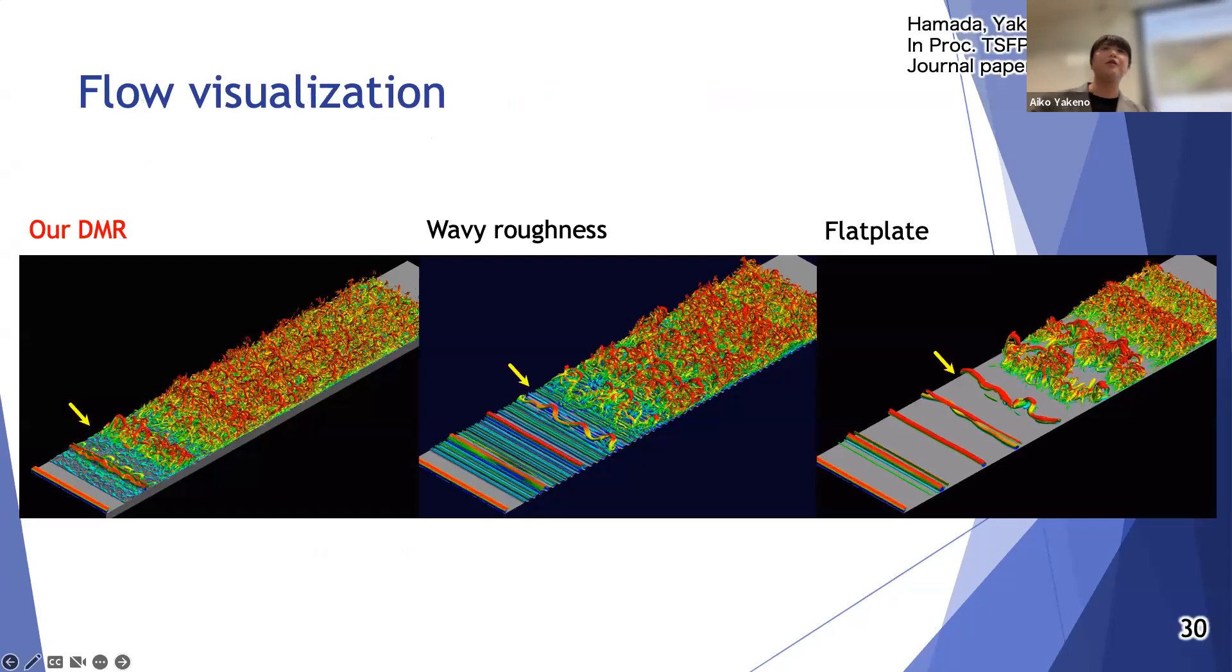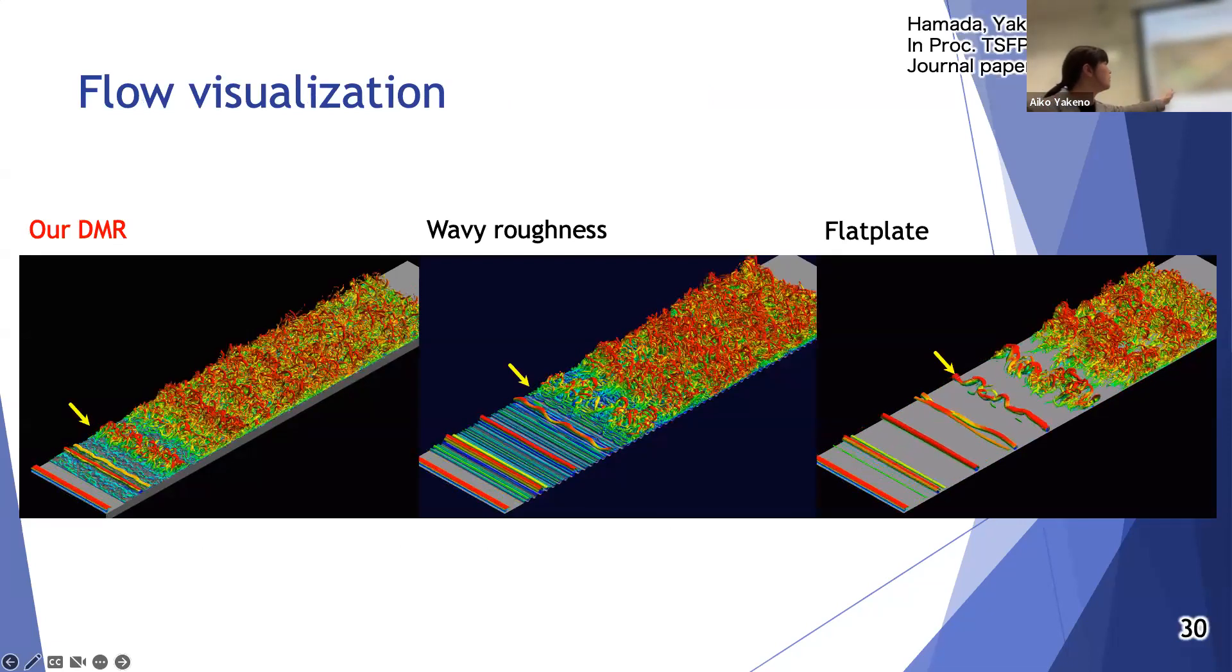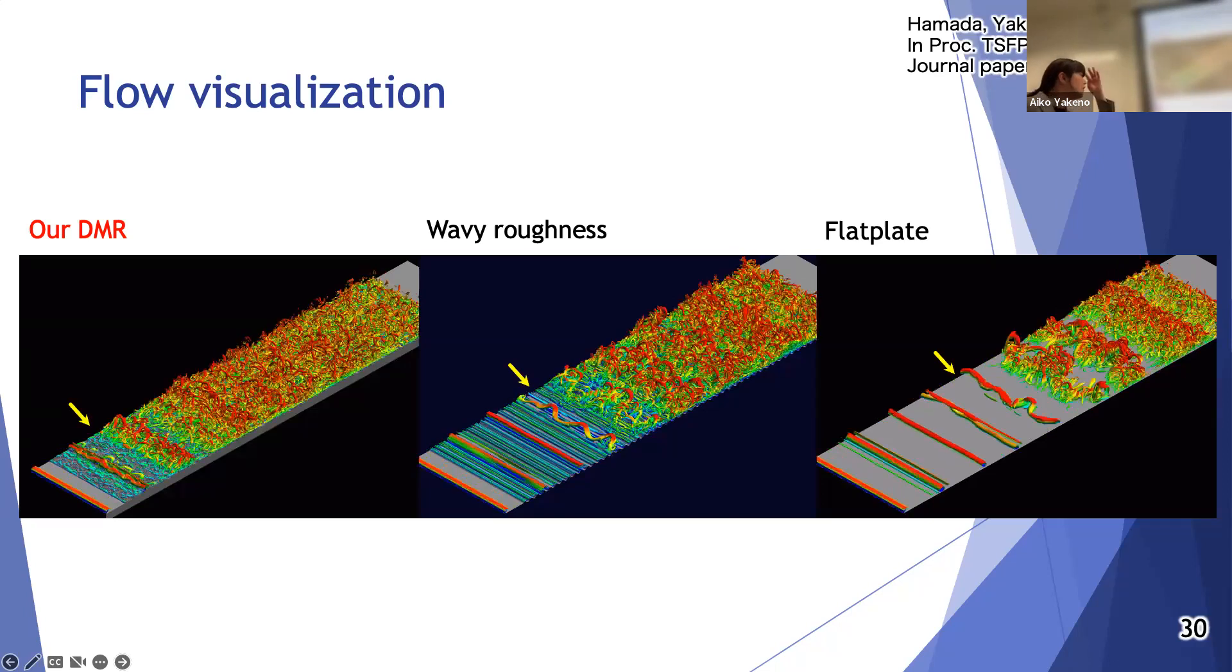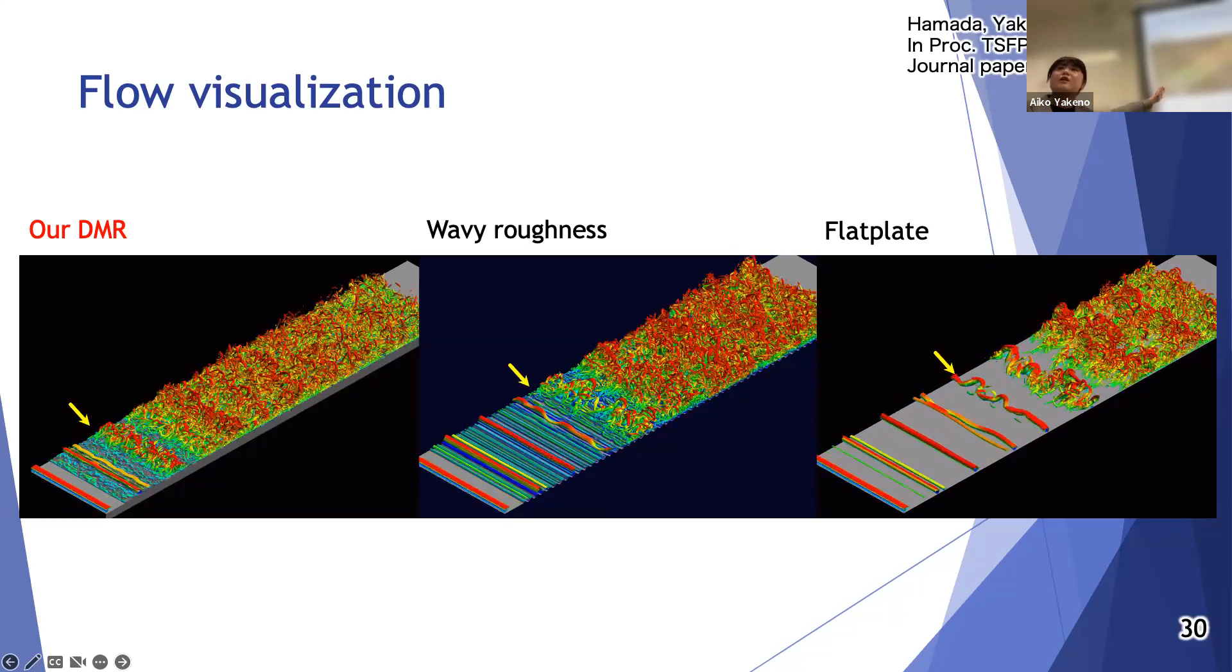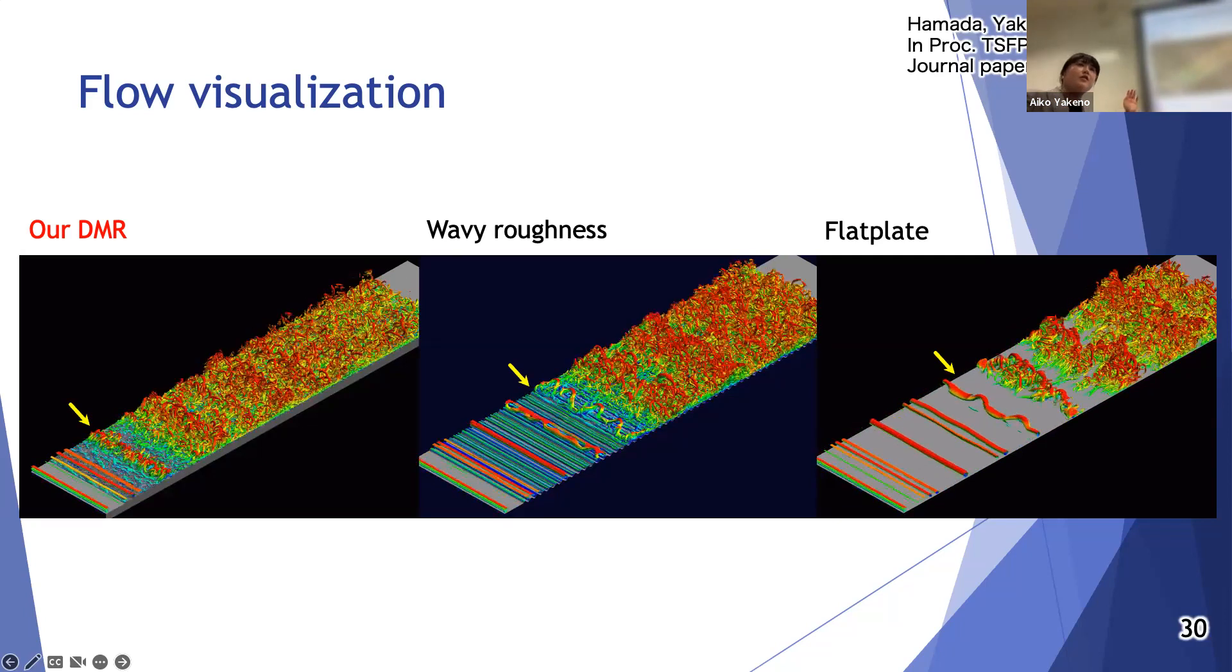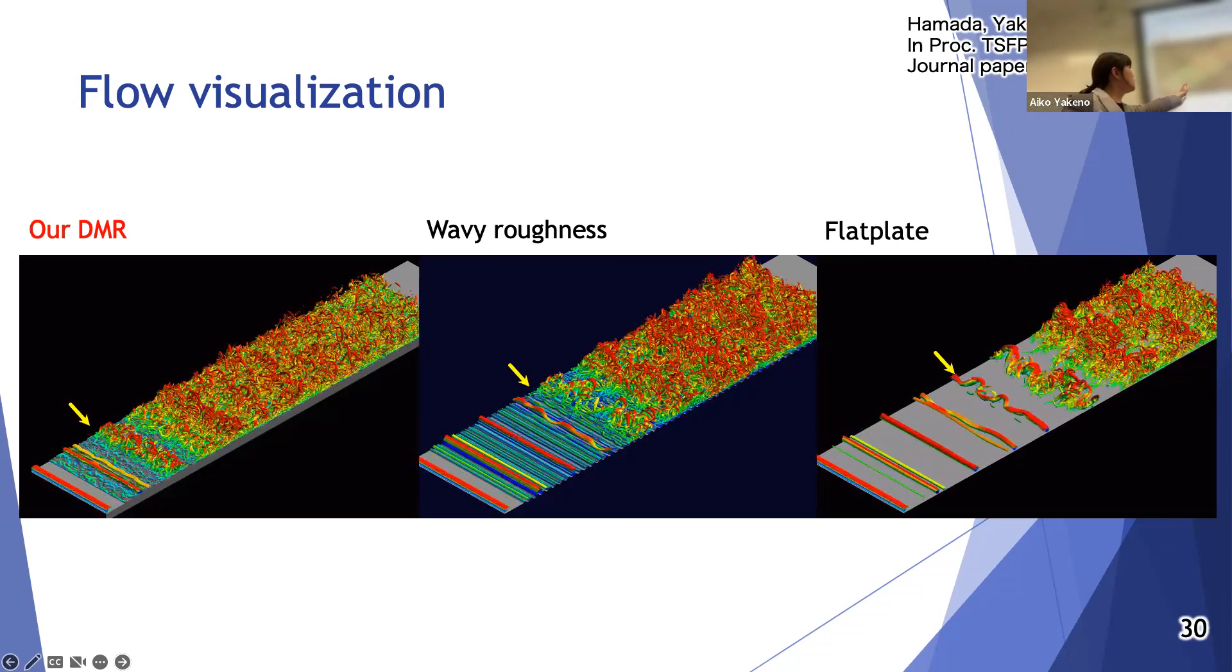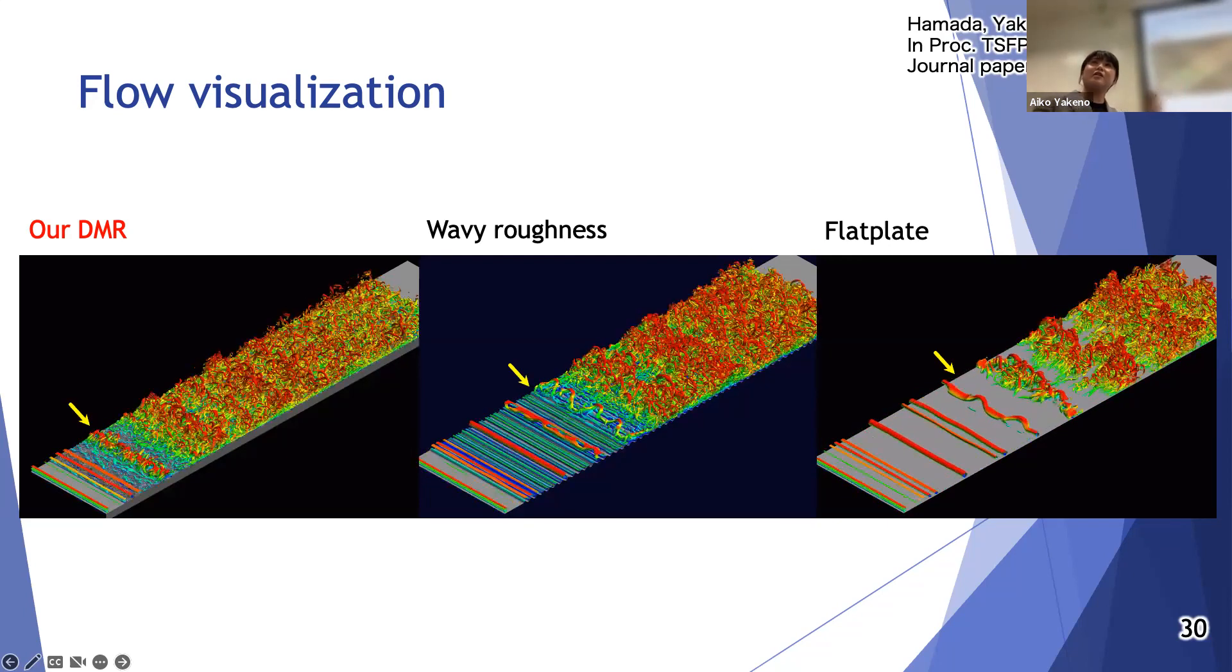I also show some visualizations, DMR on the wavy roughness. If you see, the transition occurs quickly in our DMR more than the flat plate, but you can see the vortex structure motion is restrained over the roughness. This is interesting.